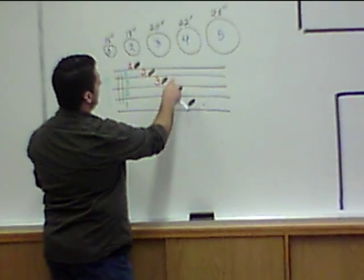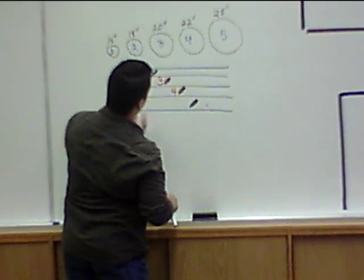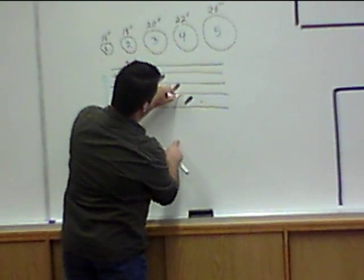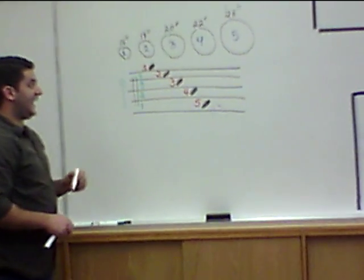The second space from the bottom is going to be bass drum number 4. And the fifth space from the bottom, or the first space from the bottom is going to be bass drum number 5.